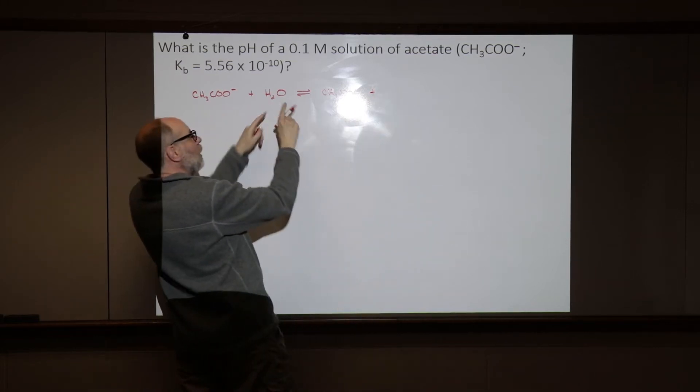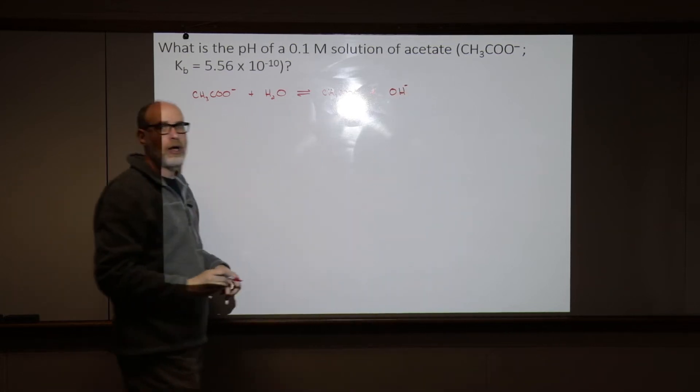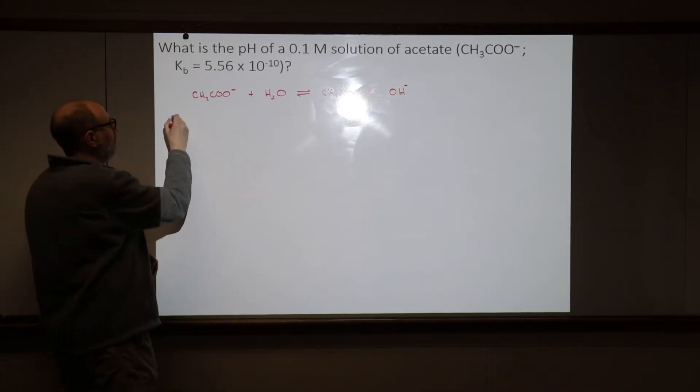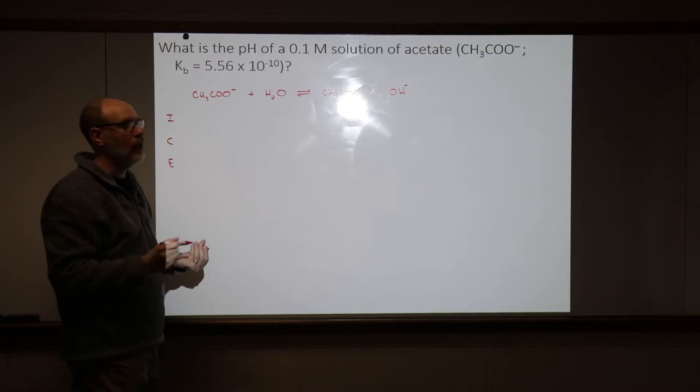And the base is, after that's given up one proton, what's left is hydroxide ion. Now we just do it exactly the same way that we've done all of these others. We're going to do an ice table.